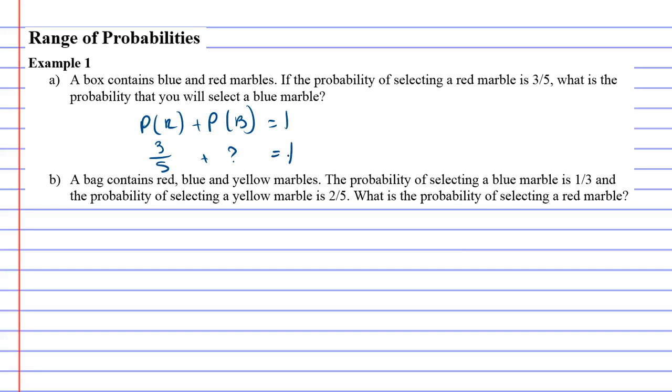Some of you might have recognized straight away, but the probability of getting a blue marble would have to be 2 out of 5 because if 3 out of 5 of them are red, technically 2 out of 5 should be blue. The way of working it out is actually done by going 1 minus the other probability, which would have given you 2 over 5.